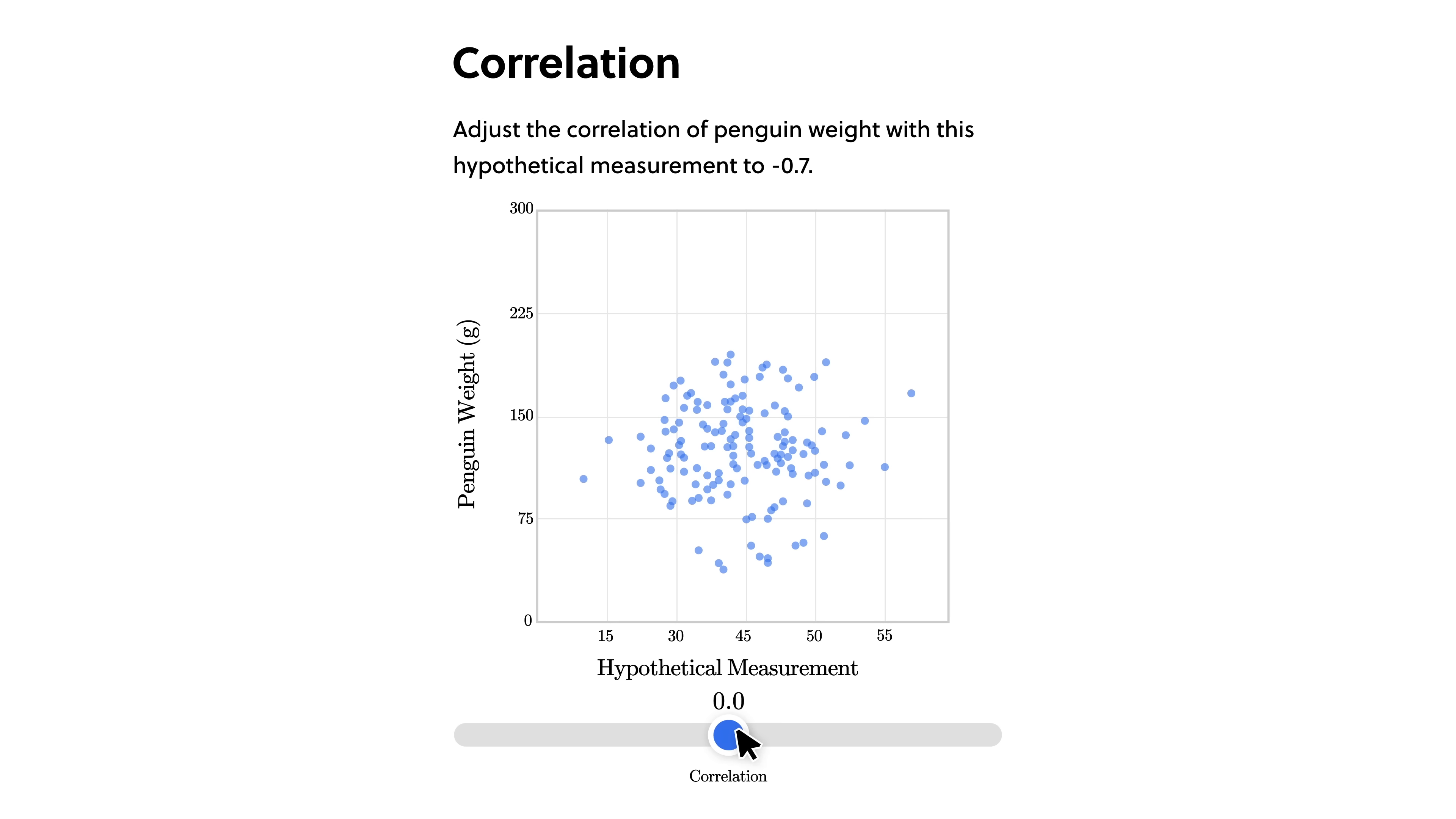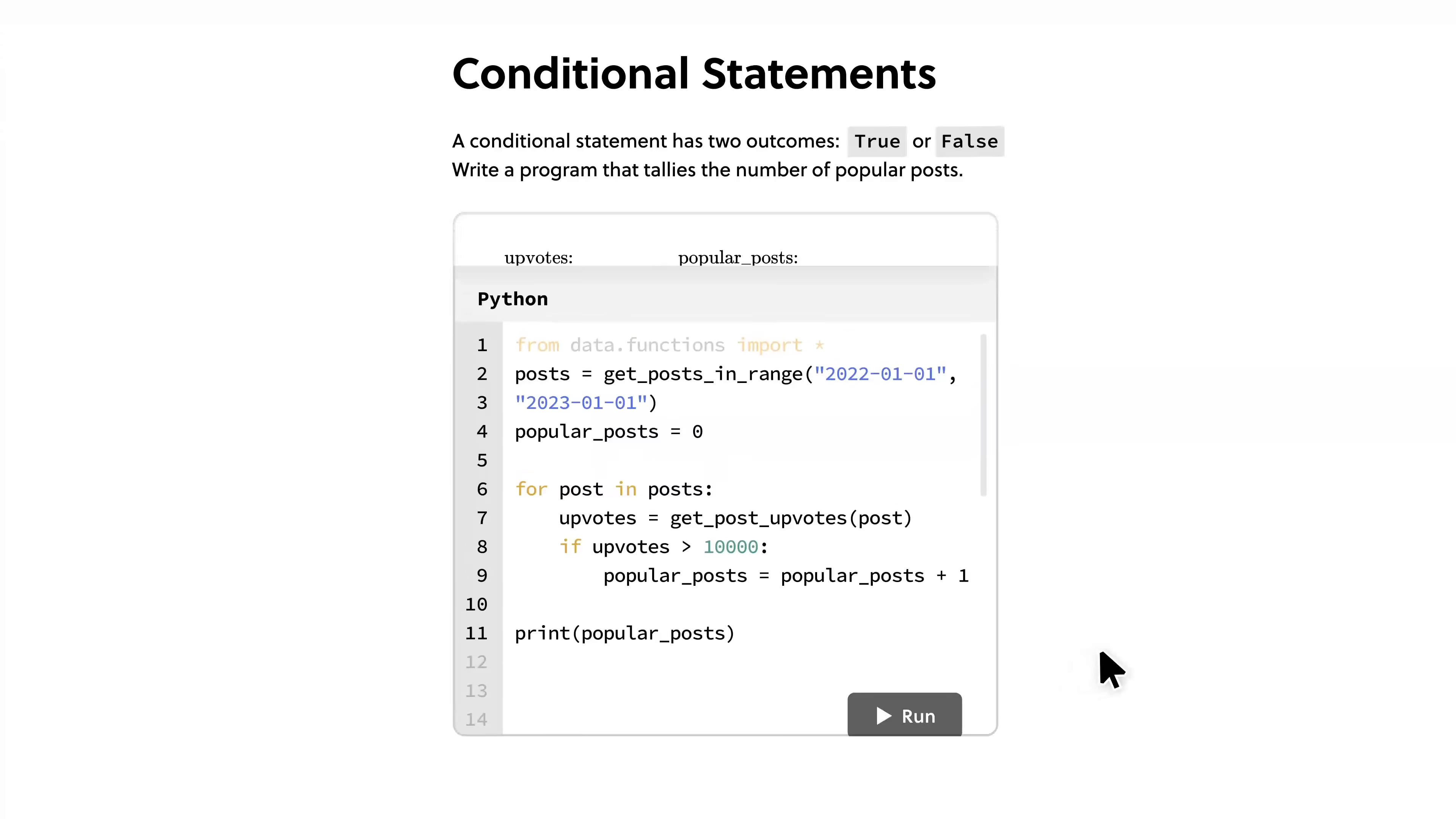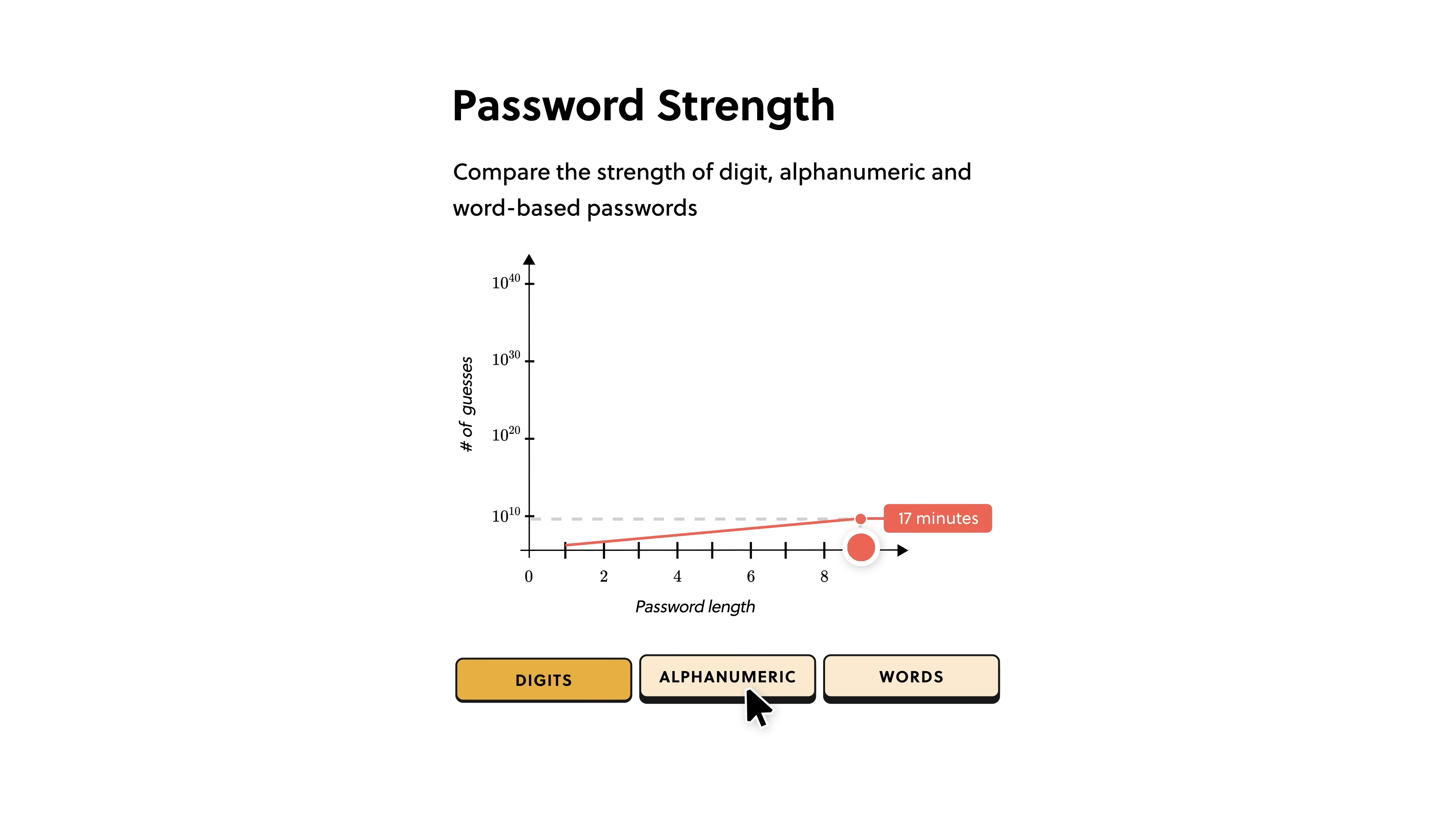Brilliant emphasizes learning through hands-on experience, offering thousands of interactive lessons spanning math, data analysis, programming, and AI. Personally, I've been engrossed in Brilliant's latest course series, How Technology Works, which features outstanding interactive resources covering a wide range of captivating topics.